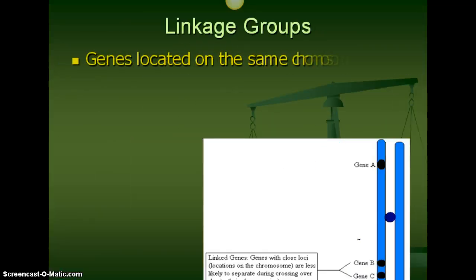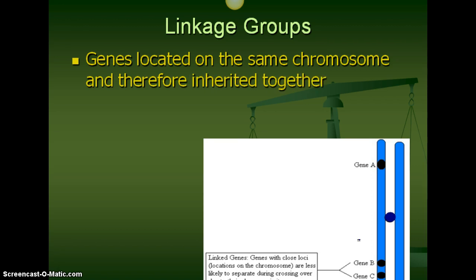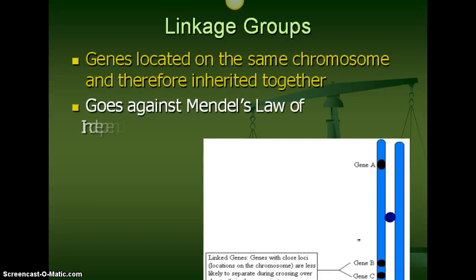One other thing that Thomas Morgan was able to discover was linkage groups. He found that some genes located on the same chromosome are inherited together. We've already said that Mendel came up with the law of independent assortment, saying that genes basically aren't linked together. Well, he was lucky in that the traits he studied were not linked together, but there are some traits that seem to get passed on together more often than others. These are called linked genes, and it goes against Mendel's law of independent assortment.